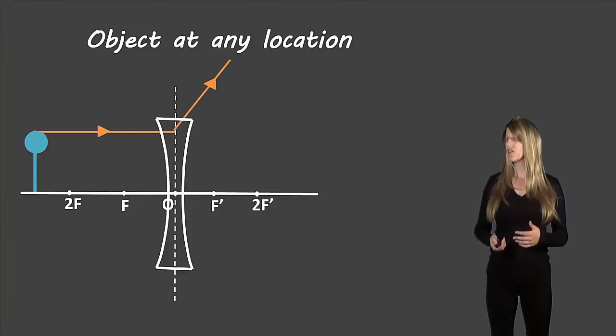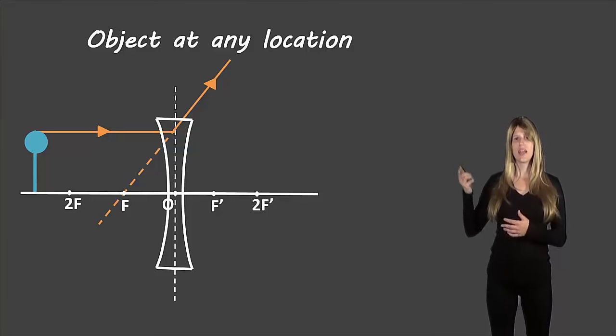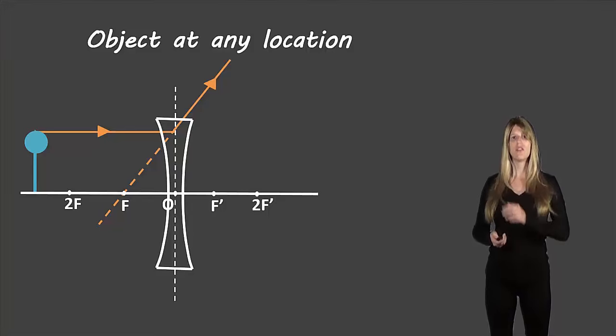So this is what that would look like, as if that line had come from the focus, and we can draw a dotted line on the side of the lens to show that it didn't actually come from the focus, but that light ray looks as if it came from the focus, and that's the angle that it will refract from.